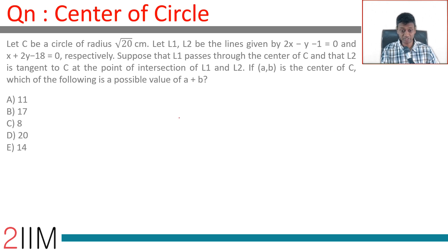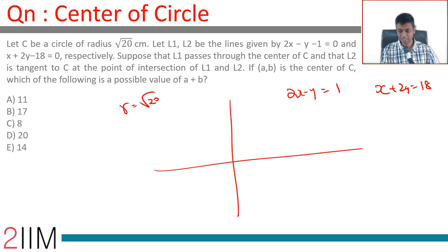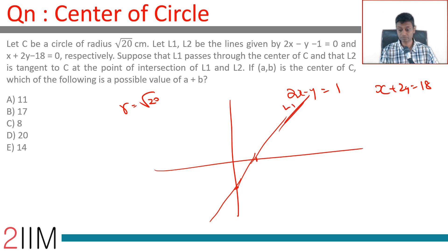Let C be a circle of radius √20 centimeters. Let L1 and L2 be the lines given by 2x minus y equals 1, and x plus 2y equals 18. For L1: putting y=0 gives x=1/2 (point: 1/2, 0), and putting x=0 gives y=-1 (point: 0, -1). This gives us the line L1.